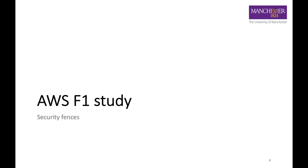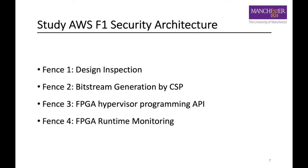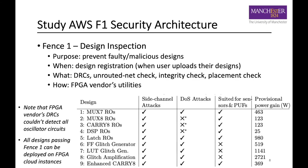We are now going to study the AWS F1 security architecture. Currently, there are four security fences. The first fence is design inspection. The purpose is to prevent malicious designs when users upload their designs. A couple of FPGA vendor tools are used, such as DRC, unrouted net checks, design integrity checks, and placement checks. It should be noted that the DRC cannot detect all oscillator circuits.